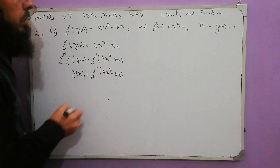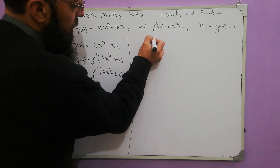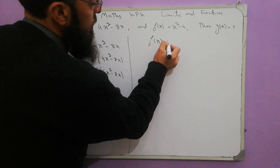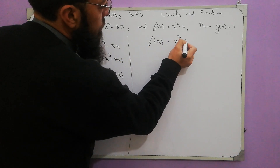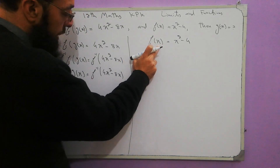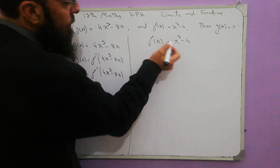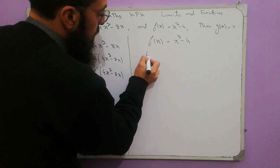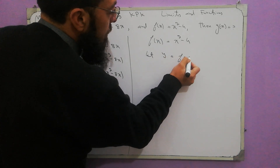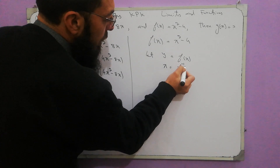First I find f-inverse of x from this function and then put it in this equation. So f of x is equal to x squared minus 4. First I find f-inverse of x and then f-inverse of 4x squared minus 8x. So f of x is equal to x squared minus 4. Let y equal f of x, or x equal f-inverse of y.